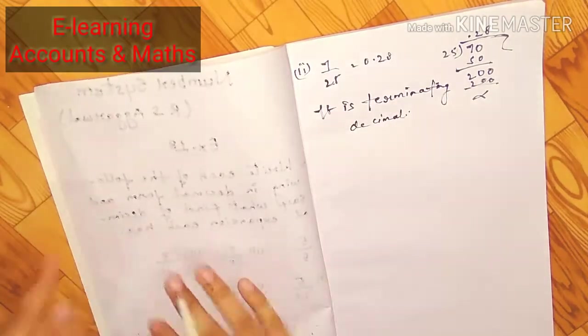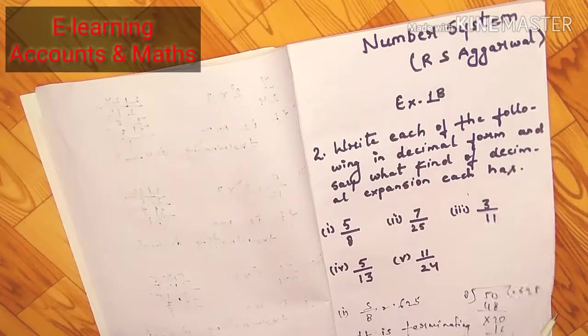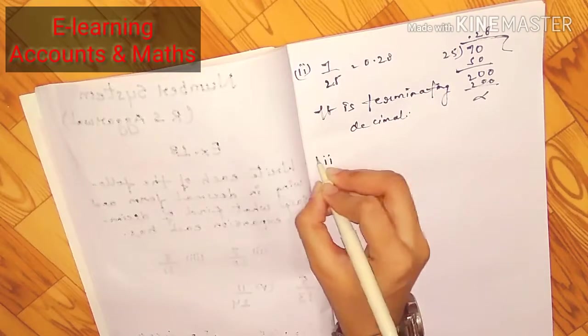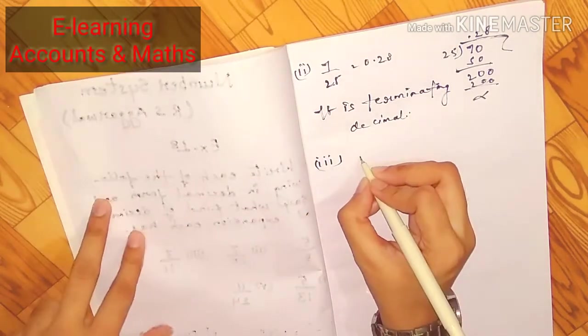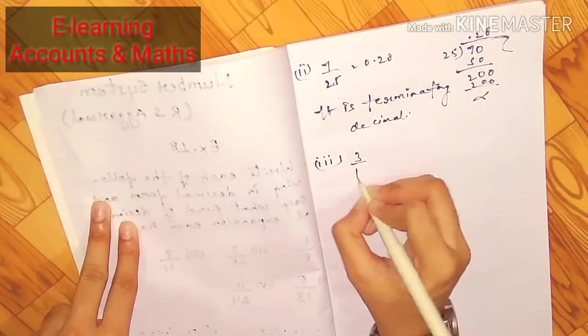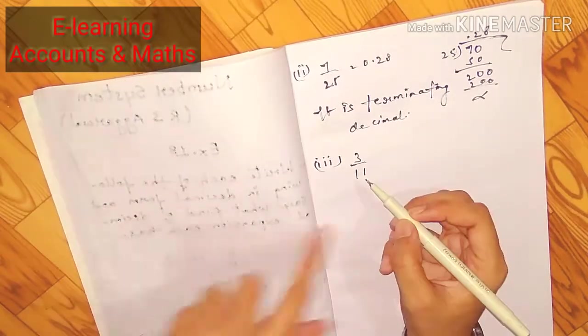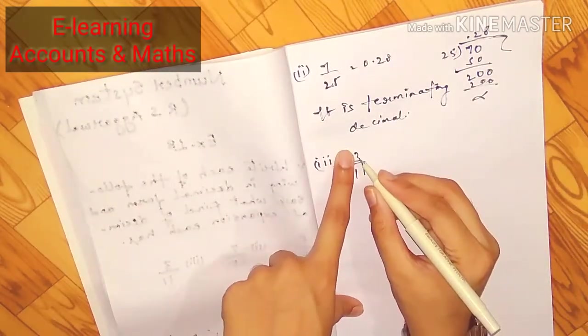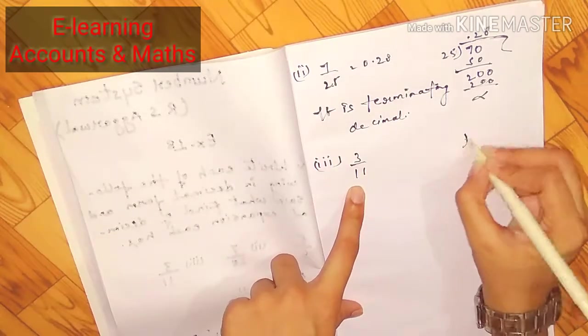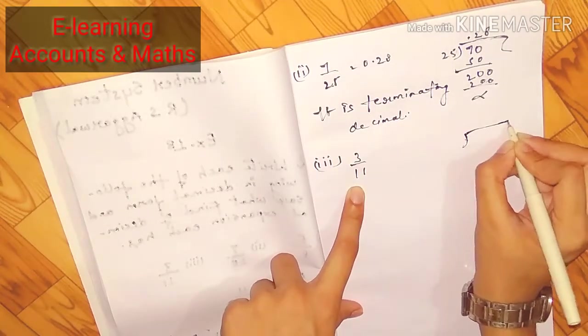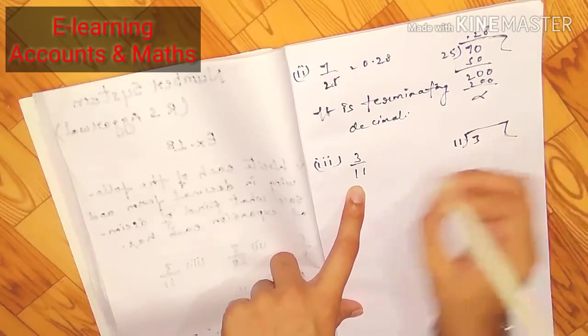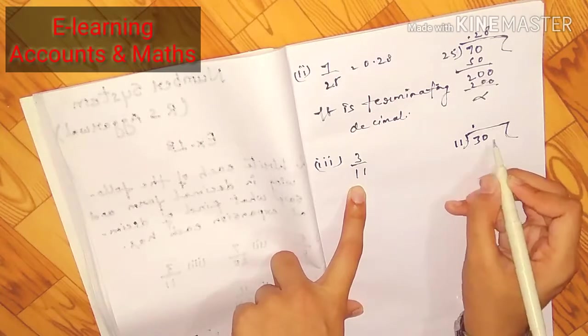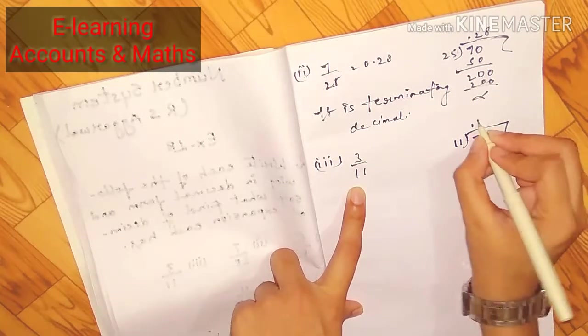So students, question number three, three by eleven. We can divide eleven and three. Now we are going to add zero and divide.